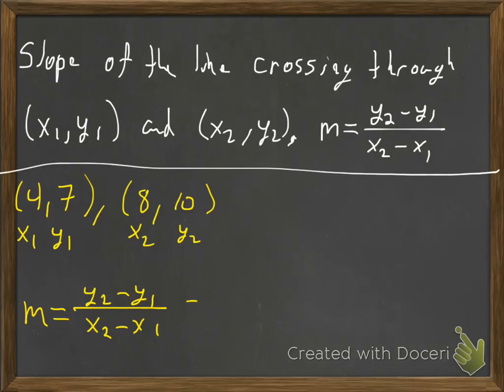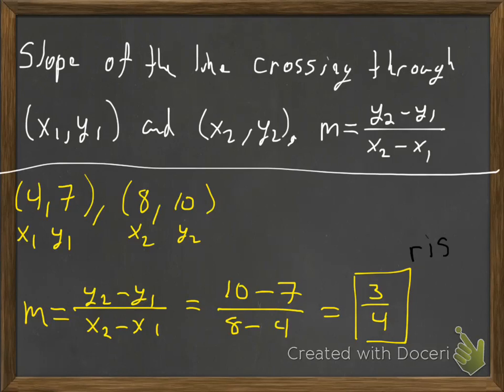And then we'll go ahead and plug it in. y2 is 10, y1 is 7, so 10 minus 7, divided by x2 is 8, minus x1 is 4. 10 minus 7 is 3, 8 minus 4 is 4. So this is positive, so we would say that this line would rise. So it will rise.